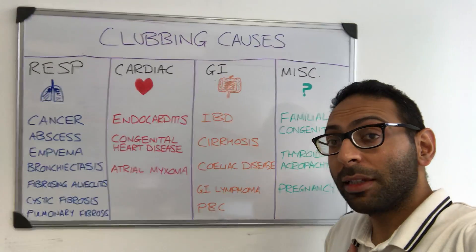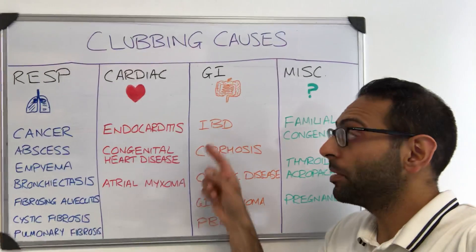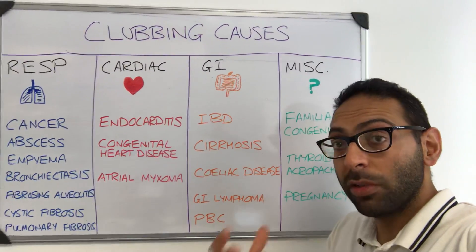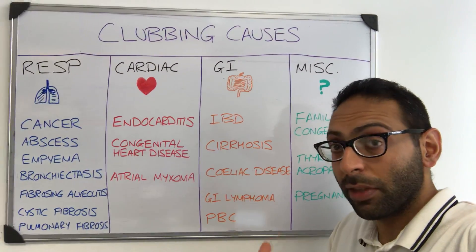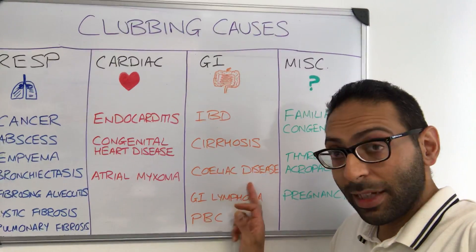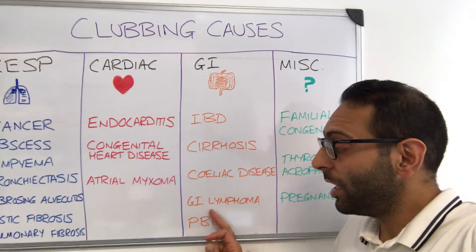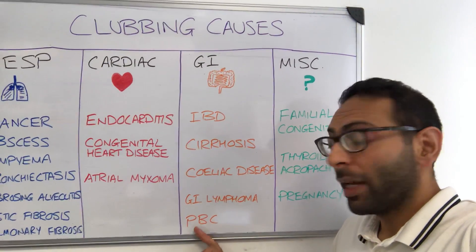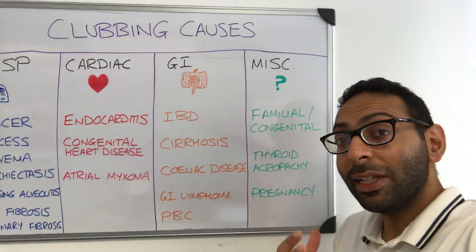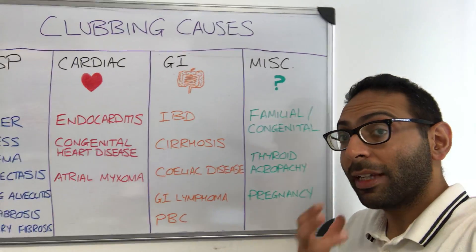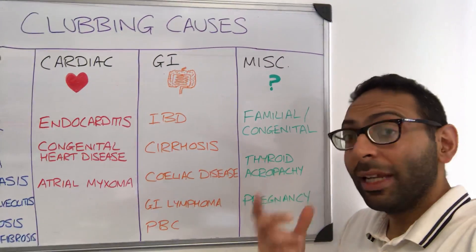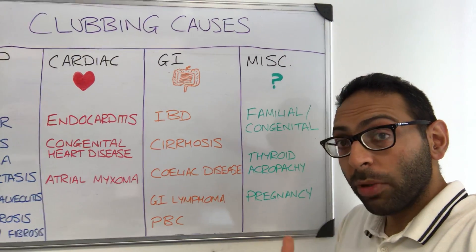If you look at the GI system, then inflammatory bowel disease is a common cause — things like Crohn's disease or ulcerative colitis — as well as liver cirrhosis, celiac disease, GI lymphoma, and primary biliary cirrhosis.